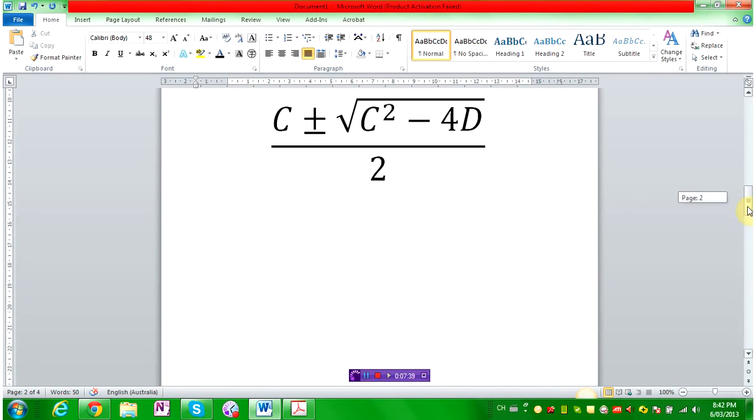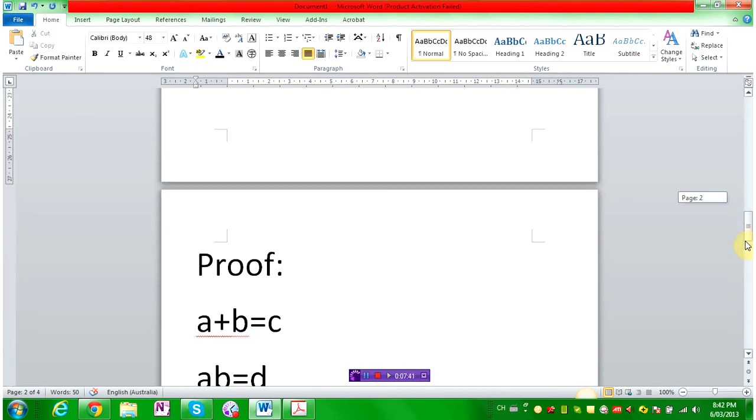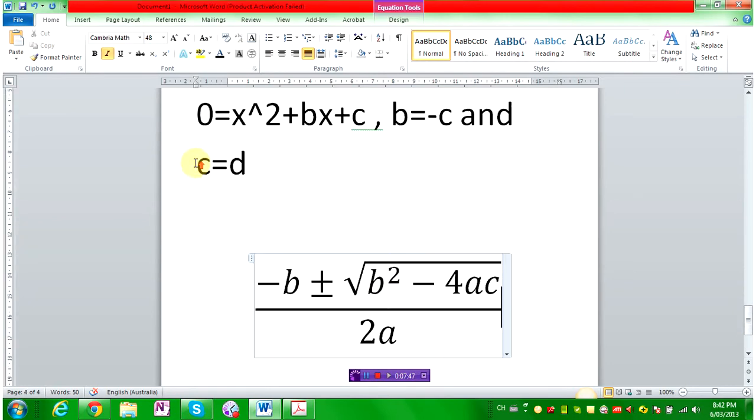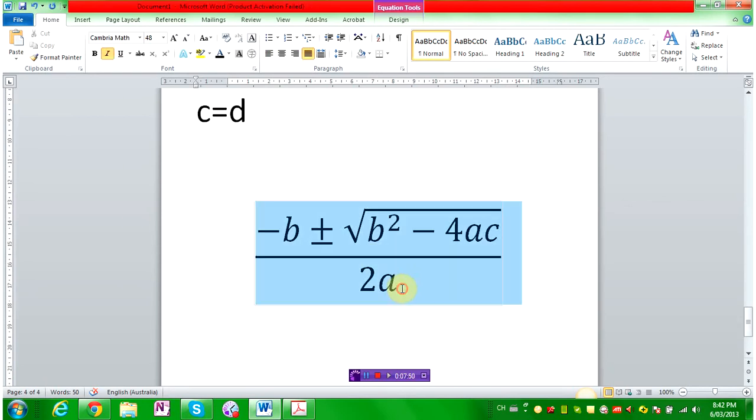And, you square root it, and it's C squared minus 4 times D, as shown here. And, you divide it by 2a. Again, a is 1 here. So, all you have to do here is divide it by 2 times 1, which is equal to 2. So, all you have to do is type in 2.